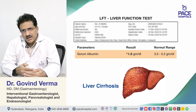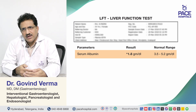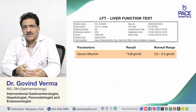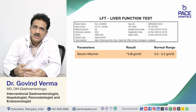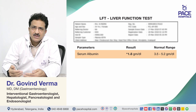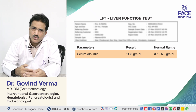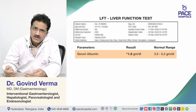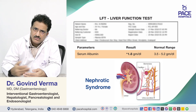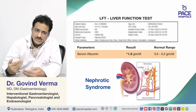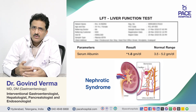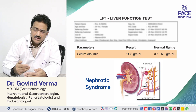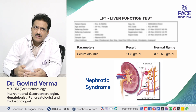Other causes include loss of albumin through the gut — we call it protein-losing enteropathy. There can also be nephrotic syndrome, where albumin is lost through the urine, leading to low albumin as well.